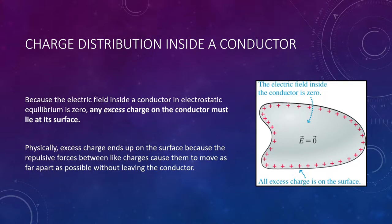That means the charges that are there are in place and not moving. If you have any excess charge, it would have to be on the surface of the conductor, because if the charges were on the inside, they would exert forces on one another and push each other around. So this forces our idea that charges must reside at the surface of our conductor.